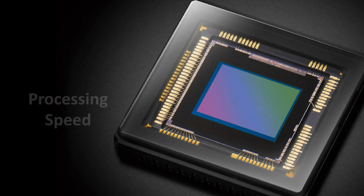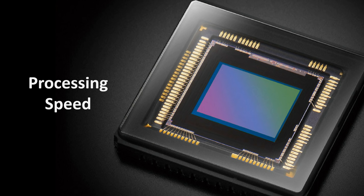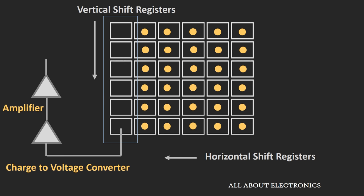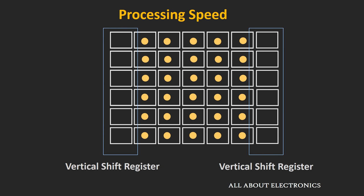Now let's compare these two sensors in terms of processing speed. As mentioned, in the case of the CCD sensor, the charge generated in each pixel is converted into voltage one by one, so the overall processing speed of the CCD sensor will be lesser compared to the CMOS sensor. But this processing speed can be further increased by using multiple shift registers, so by doing parallel processing, we can increase the processing speed of this CCD sensor.